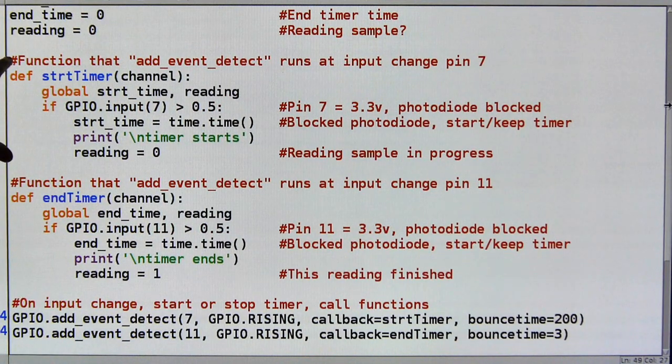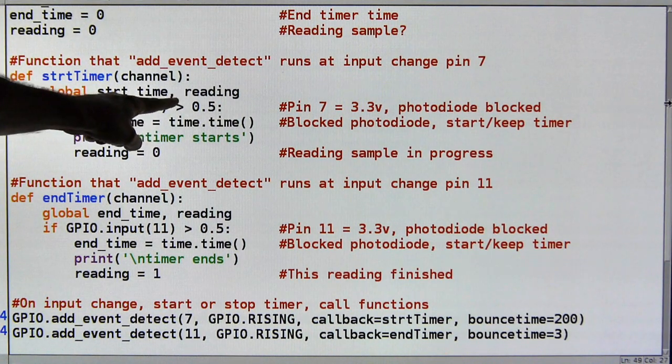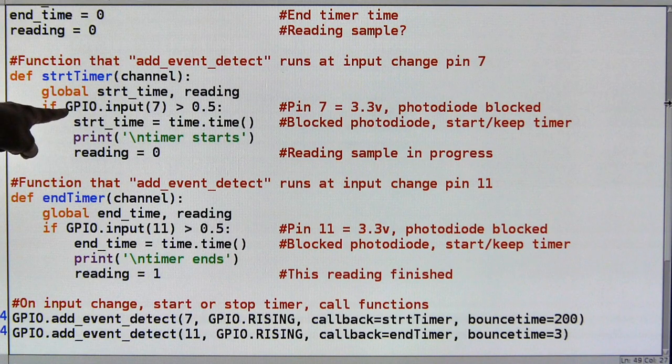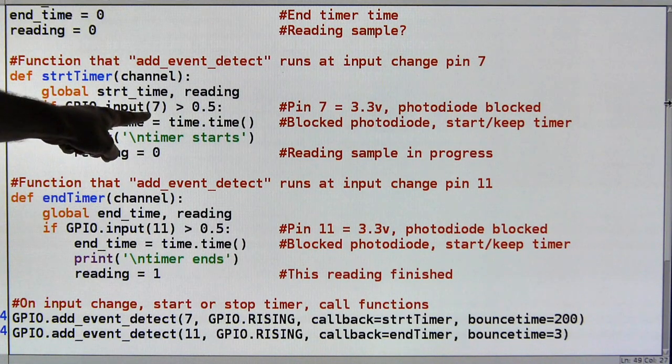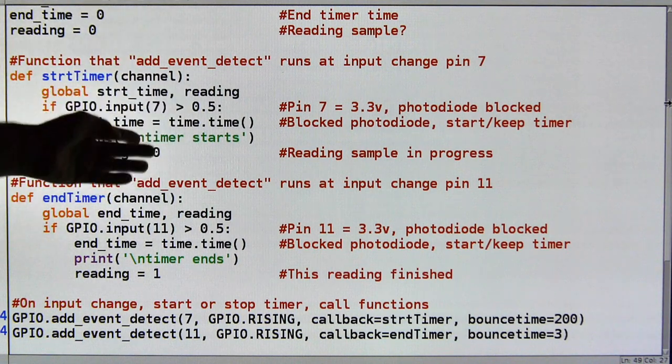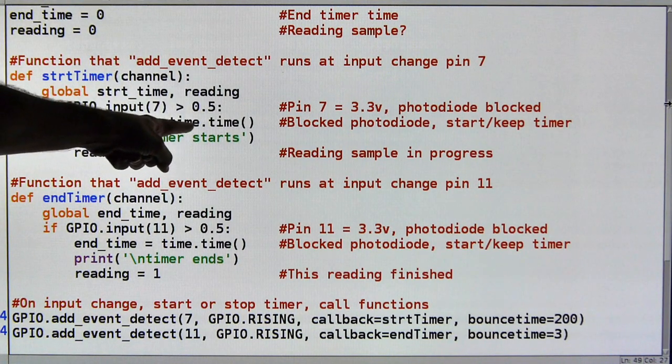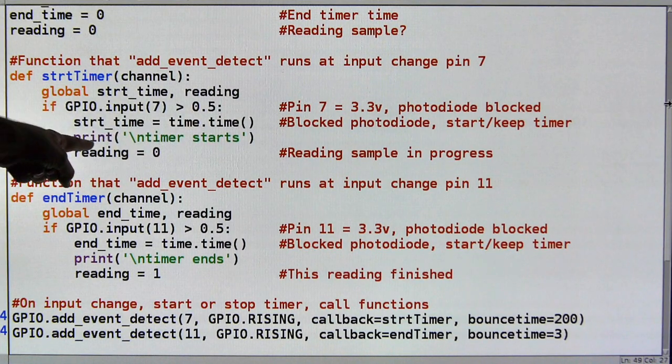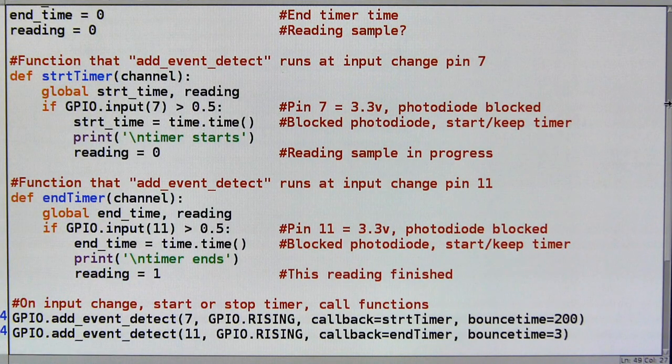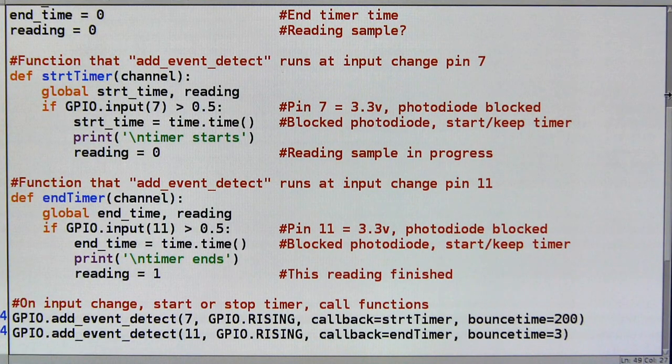My first function here is to start the timer. So when the first interrupt is hit. It starts the timer running. And I've globalized the start time and the reading variables. The GPIO input on pin 7. If the photodiode is blocked. Or in this case the switch is triggered. I'm going to save the start time. I'm going to go grab the start time out of time.time. Then I'm going to print that my timer has started. And I'm going to set reading to zero. Which tells me that I've got a reading in process. I've got a sample in process.